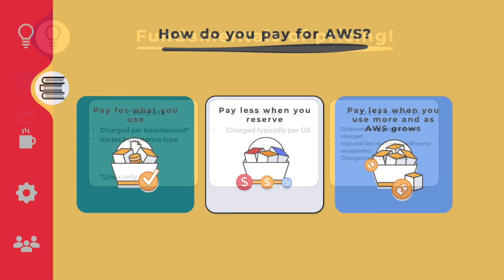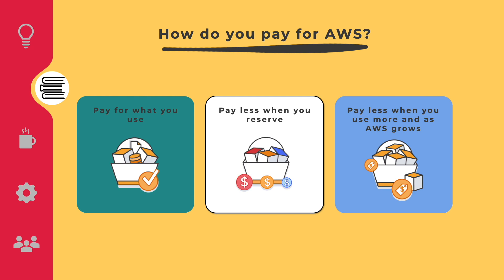How do you pay for AWS? You pay for what you use. If you create one EC2 instance, you are charged per hour for Windows or per second for Linux. However, if you reserve that EC2 instance on a one or three year contract, you can get up to 75% off the on-demand price, and you can decide whether you want to pay all upfront, partial upfront, or no upfront at all.